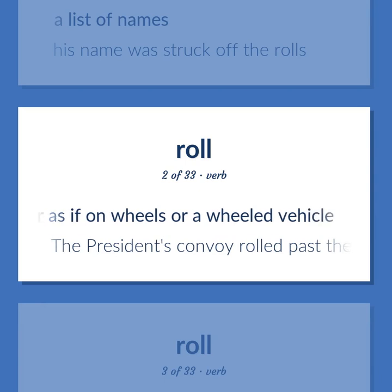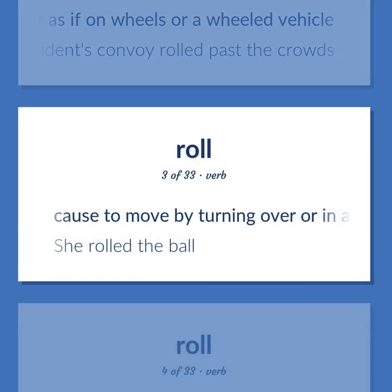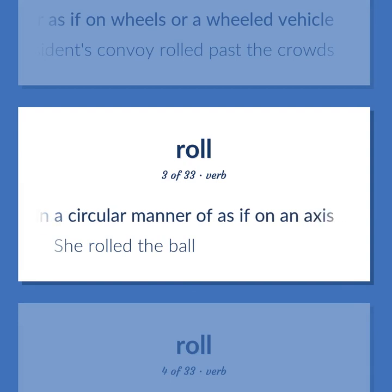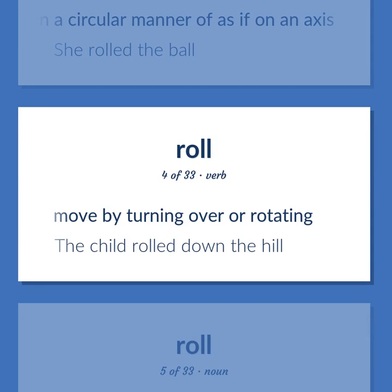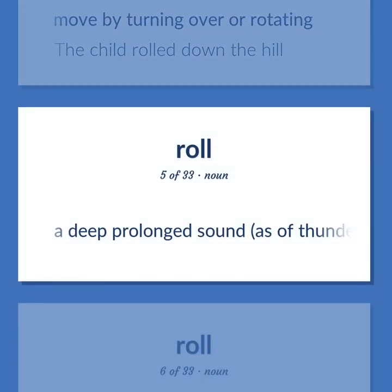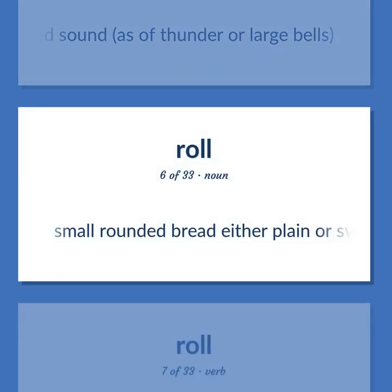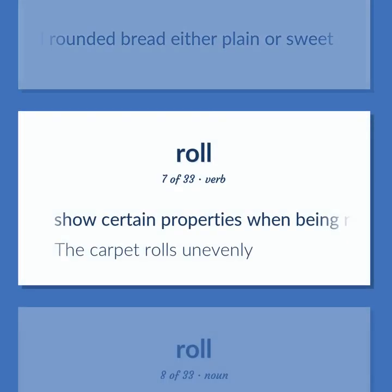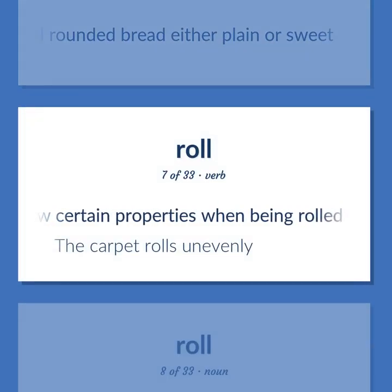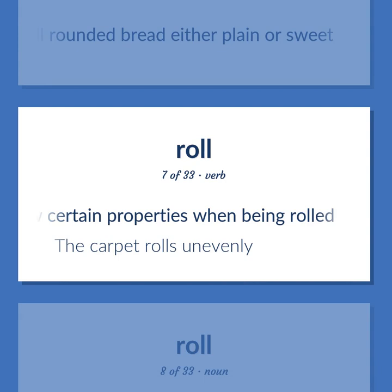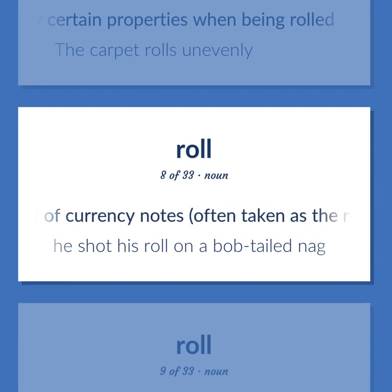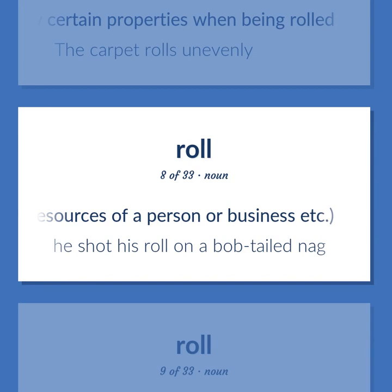Roll (verb/noun): move along on or as if on wheels — the president's convoy rolled past the crowds. Cause to move by turning over or in a circular manner — she rolled the ball. Move by turning over or rotating — the child rolled down the hill. A deep prolonged sound as of thunder or large bells. A small rounded bread, either plain or sweet. Show certain properties when being rolled — the carpet rolls unevenly. A roll of currency notes, often taken as the resources of a person or business.